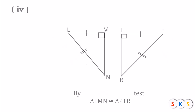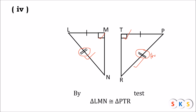Here we have two right-angle triangles because angle M is 90 degrees and angle T is 90 degrees. Side LN is congruent to side PR because they got a same kind of mark — these two sides are the hypotenuse of both triangles, so the hypotenuses of both triangles are congruent. Side LM is congruent to side TP. Therefore these two triangles are congruent by Hypotenuse-Side test.